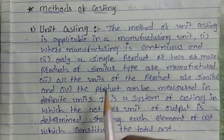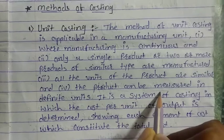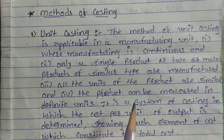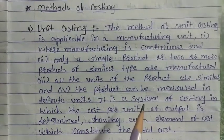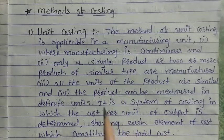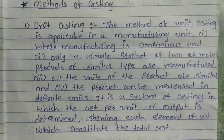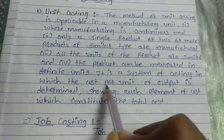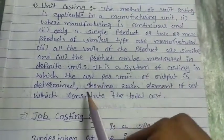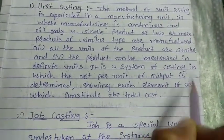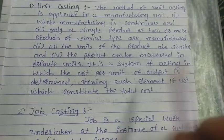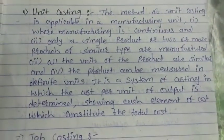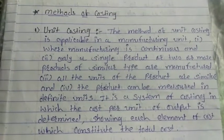The product can be measured in defined units. It is a system of costing in which the cost per unit of output is determined, showing its elements of cost which constitute the total cost. This method is called unit costing.